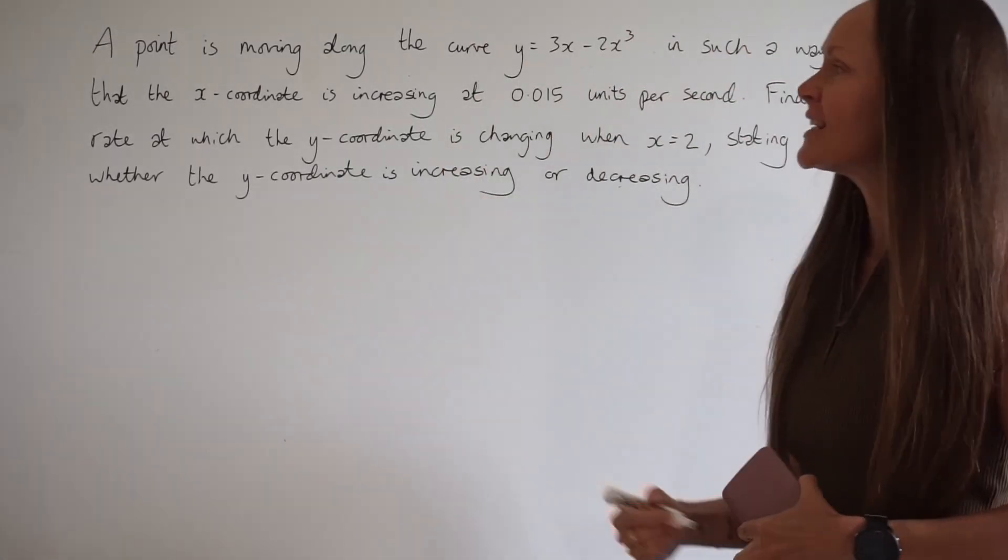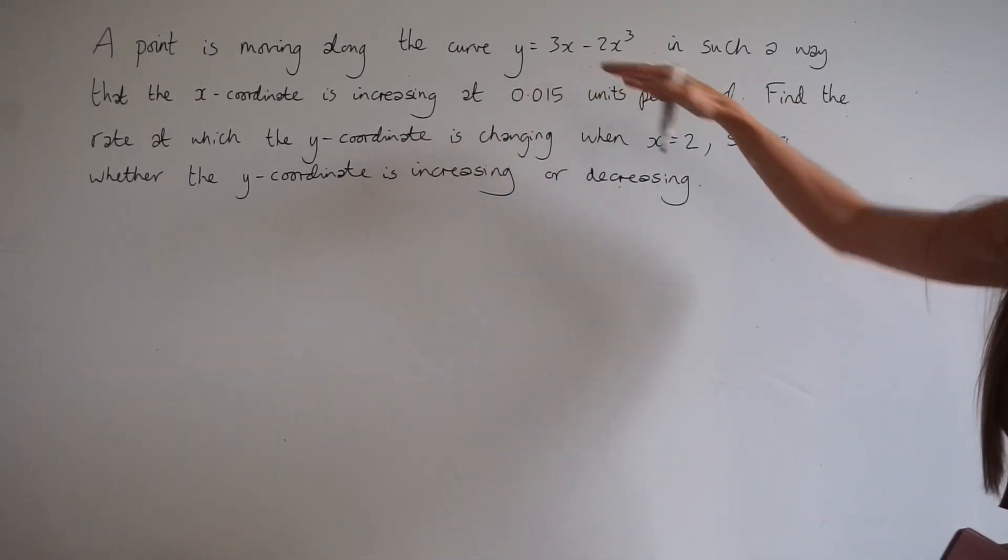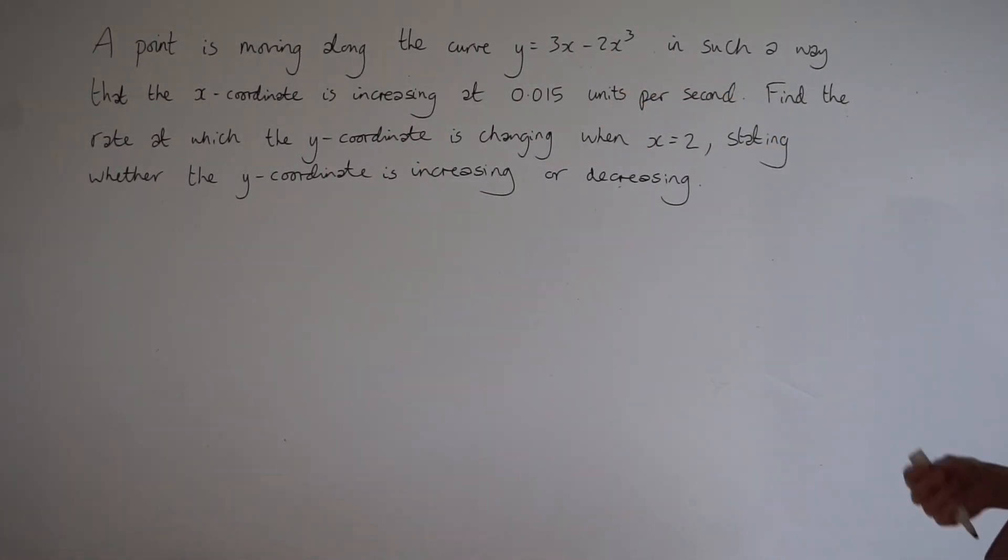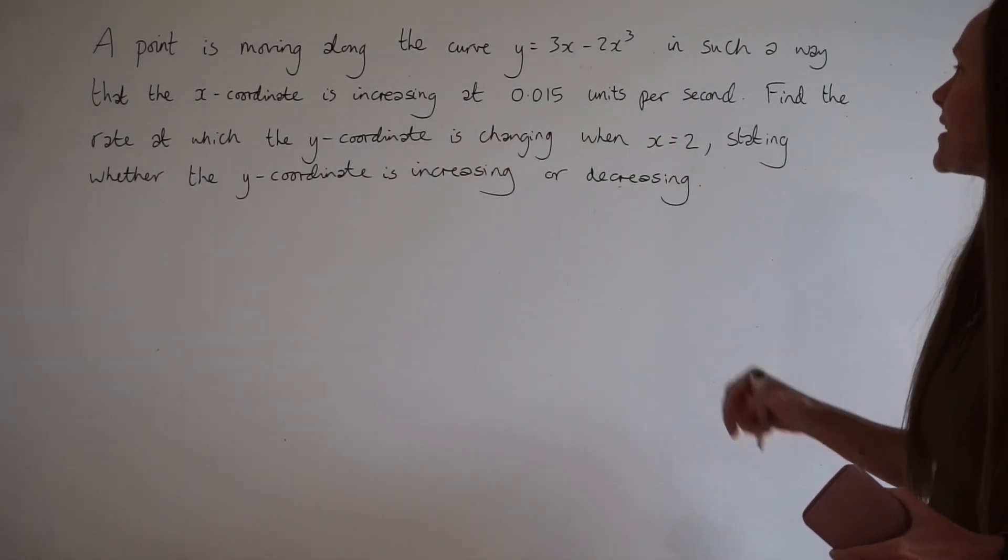Hey guys, in this question it says that a point is moving along the curve y equals 3x minus 2x cubed in such a way that the x coordinate is increasing at 0.015 units per second.